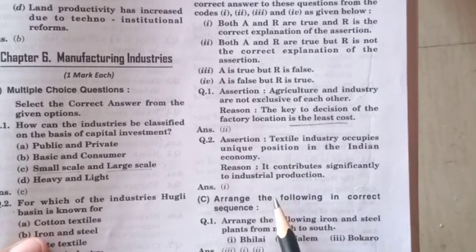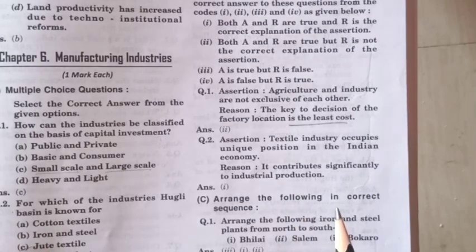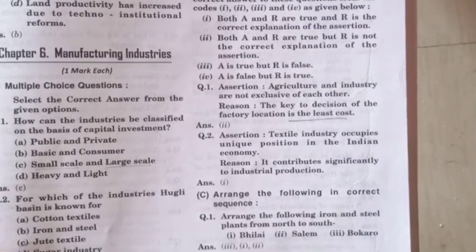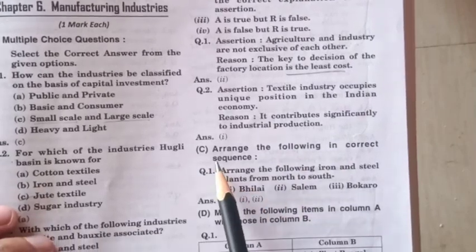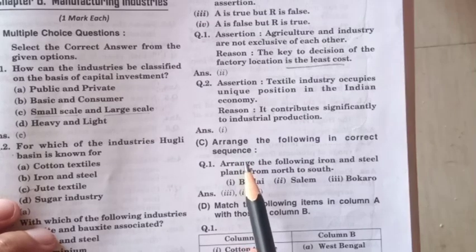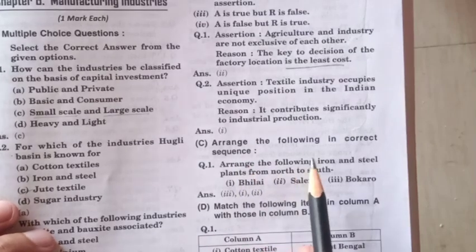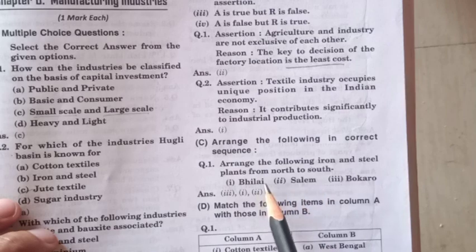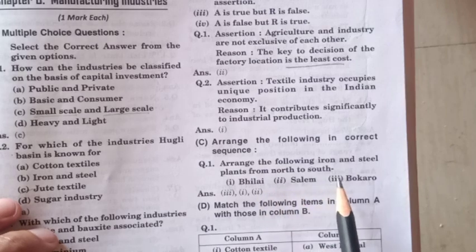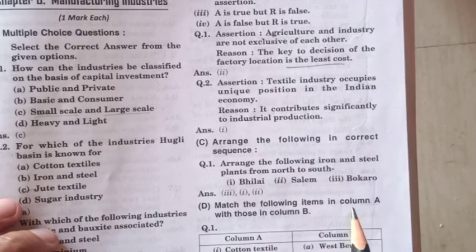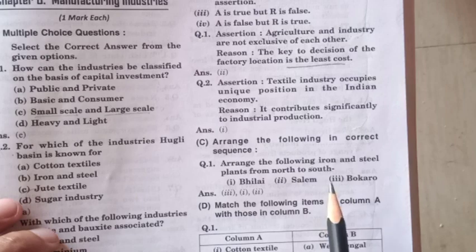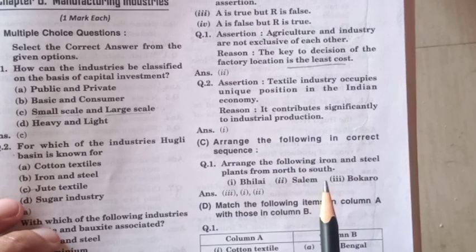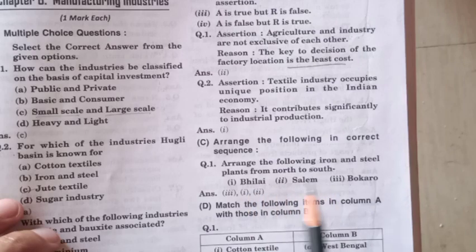Next, you have to arrange the following in the correct sequence: arrange the following iron and steel plants from north to south. Going from north to south, the sequence involves Bokaro, Bhilai, and Salem.